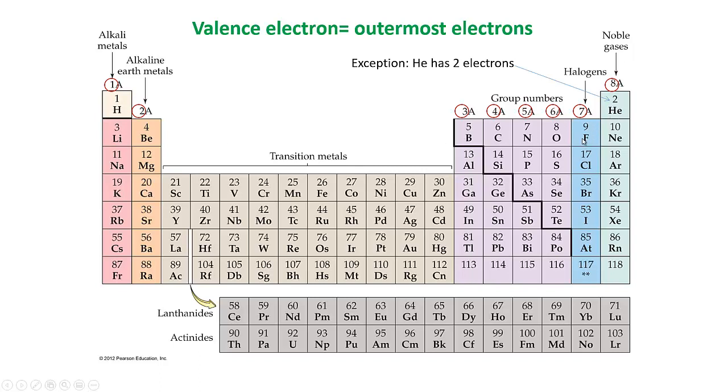Whereas fluorine over here has seven valence electrons, it makes more sense for it to just gain one electron instead of losing seven. And so it's going to gain one electron and be converted into neon.